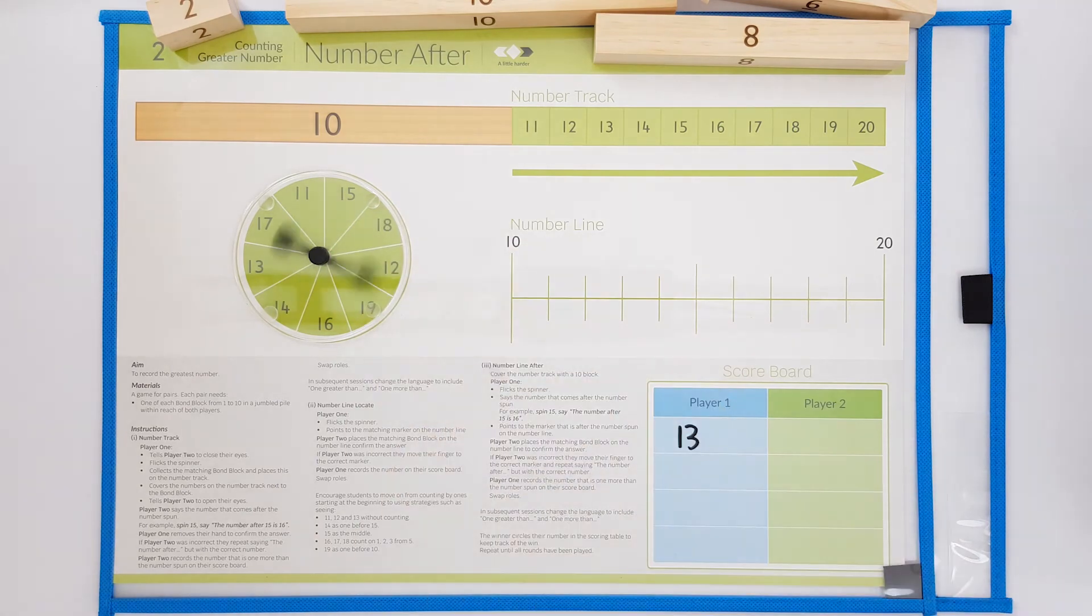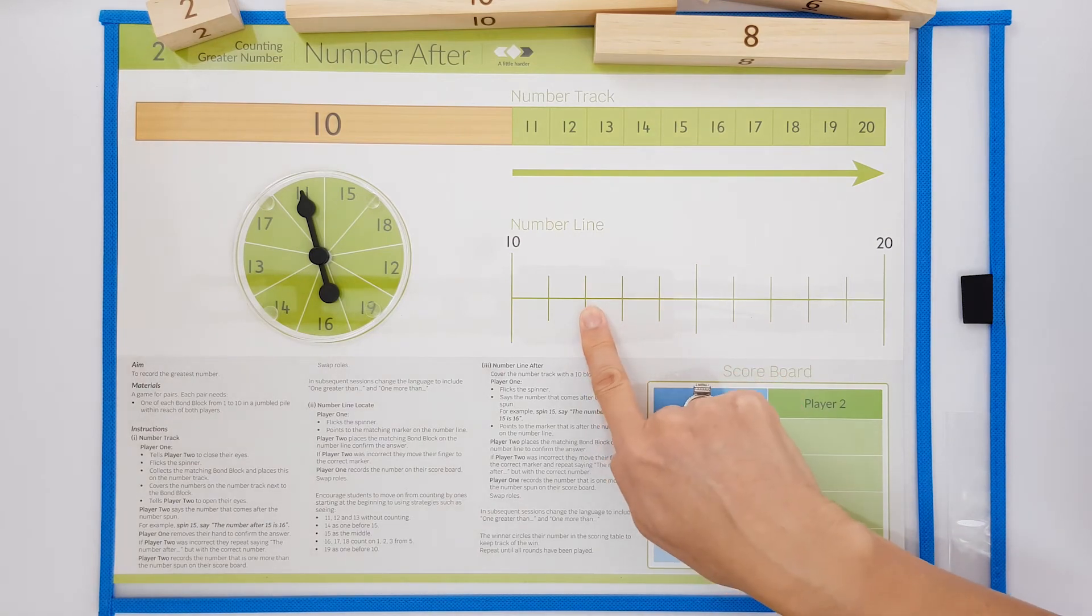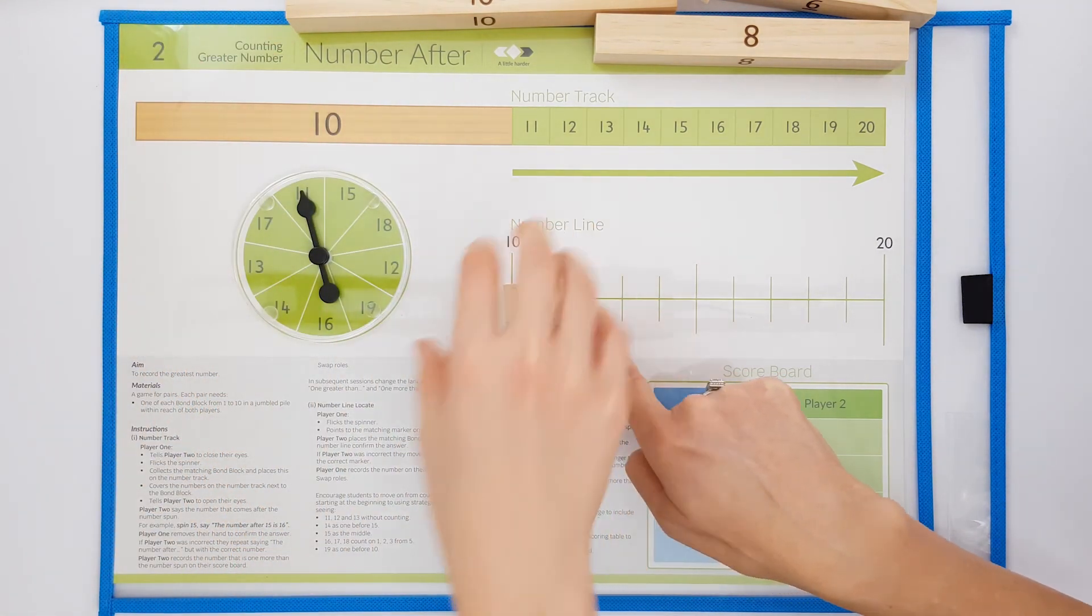Now it's my turn. And I spin and say the number after 11 is 12. Karis is going to check. You're correct. Good.